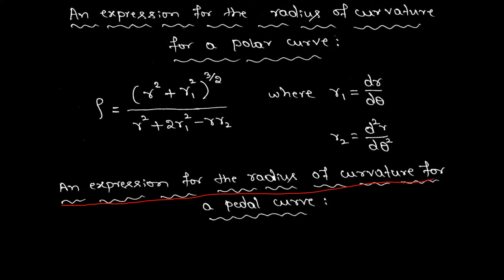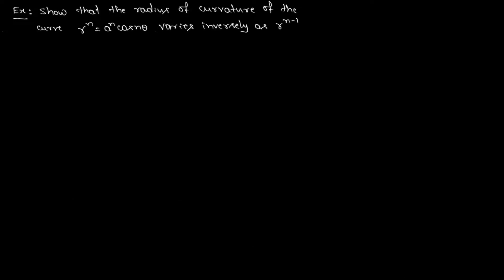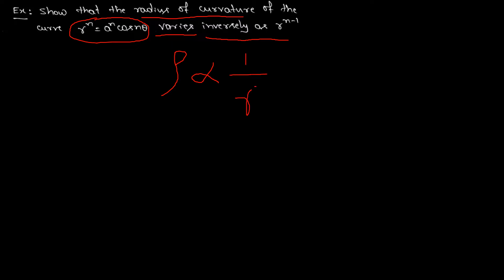We also have an expression for radius of curvature for a pedal curve given by this formula. Now let us take one example for the radius of curvature in polar form. In this question, they are asking: show that the radius of curvature of the curve r to the power n equals a to the power n into cos(nθ) varies inversely as r to the power n minus 1. Inversely means we need to prove rho is proportional to 1 divided by r to the power n minus 1.